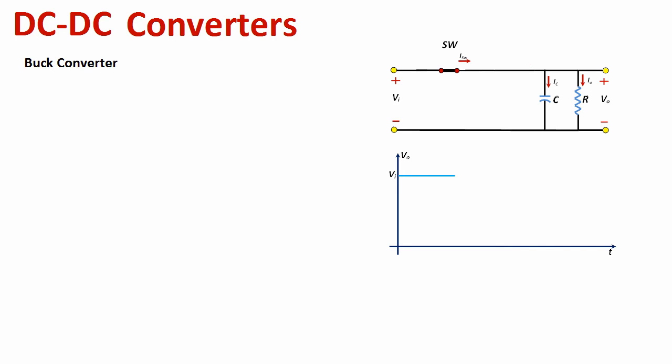Let's say that at time t1 we decide to open the switch. When we open the switch, the capacitor will start to discharge to supply the resistor with current. As we likely studied in basic circuit theory, the voltage across the capacitor will exponentially decay, as shown here. This is governed by the exponential decay equation of a first-order RC circuit.